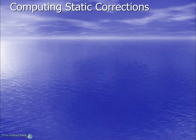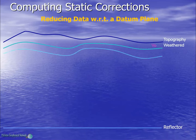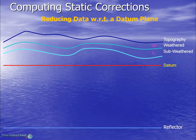We now compute the static corrections by reducing the data with respect to a datum plane. Let's consider a cross section model with elevation variations. We have a weathered layer with velocity v0 and a sub-weathered layer with velocity v1. Let's take a datum plane below the sub-weathered layer which will be the zero line. All seismic data would be reduced with respect to this datum. Now if h0 is the thickness and v0 is the velocity of the weathered layer, it will offer a time delay of h0 divided by v0. Similarly the sub-weathered layer will offer a time delay of h1 divided by v1.